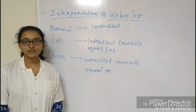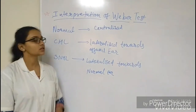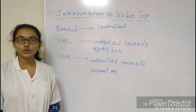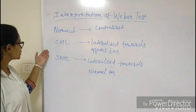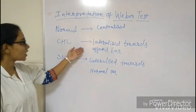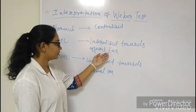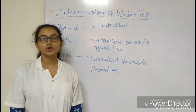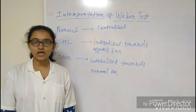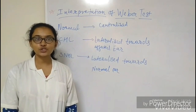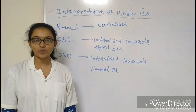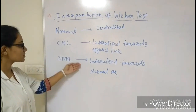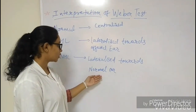Now we are going to see the interpretation of Weber's test. In a normal person, sound is centralized because he or she hears from both ears. In a patient with conductive hearing loss, sound is lateralized toward the affected ear when the hearing loss is 5 dB or more, because the patient does not receive sound from the surroundings and only gets sound from bone vibration. In sensorineural hearing loss, the sound is lateralized toward the normal ear.